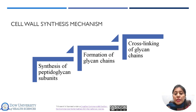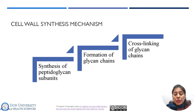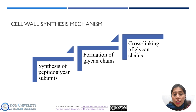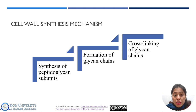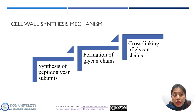This cross-linking creates a strong, rigid structure that provides support and protection to the bacterial cell. Penicillin binding proteins play a critical role in bacterial cell wall synthesis. These are the enzymes that catalyze the final step of peptidoglycan synthesis, including the cross-linking of peptidoglycan strands and the formation of the cell wall. The mechanism of action of penicillin binding proteins is to catalyze the formation of peptide bonds between adjacent residues in the peptidoglycan strands, creating a strong, rigid structure that provides support and protection to the bacterial cell.